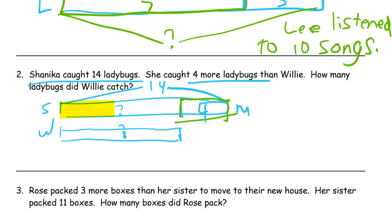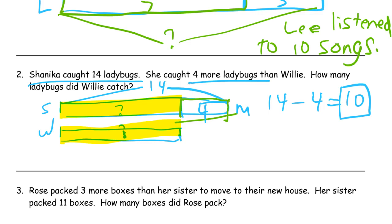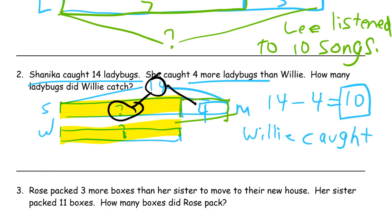This part here has to be the same as Willie's — it's the same thing I'm trying to figure out, because you can see that these are equal. So I know the whole thing is 14, and I know part of it is four, and I want to find out the other part. 14 minus four is 10 — that's the number I'm looking for, the missing part. It's almost like a number bond: 14 is the whole, four is a part, and this is the other part. So 14 minus four is 10. Willie caught 10 ladybugs.